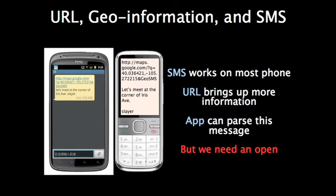OpenGeoSMS is a tiny standard which includes the URL, the geoinformation, and the short message itself, so it can easily be exchanged among different mobile devices. Whether you are using a feature phone or a smartphone, you can both receive the short message.